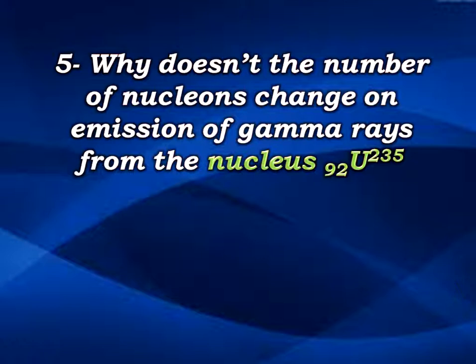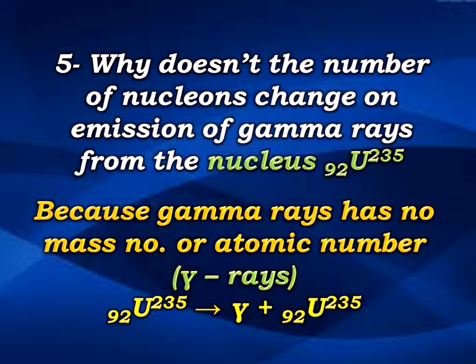The next question: why doesn't the number of nucleons change on emission of gamma rays from uranium-235 (atomic number 92)? The answer is that gamma rays have no mass number and no atomic number — they are pure energy that moves out of the nucleus without any change.